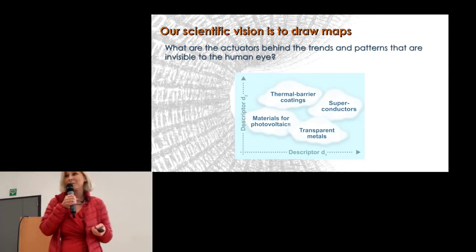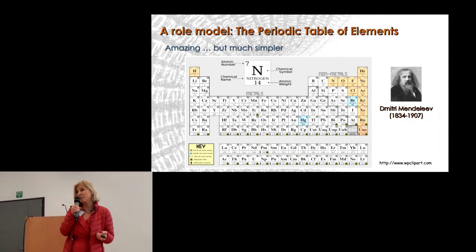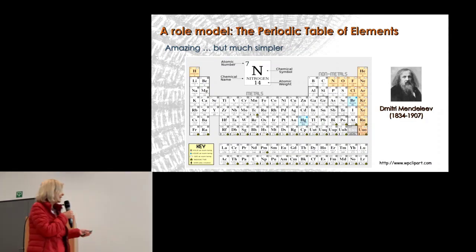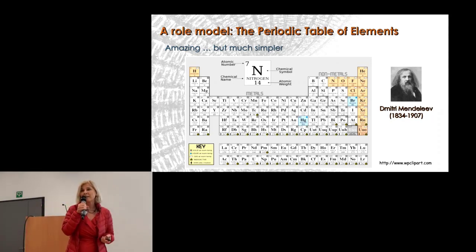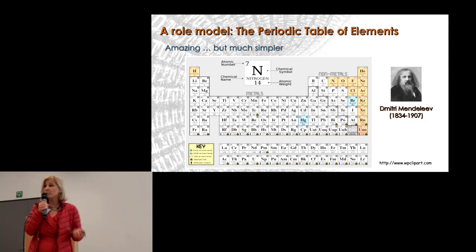We have a role model for this: the periodic table of elements. It's a two-dimensional representation, and it was really genius. Mendeleev came up with this at a time when quantum mechanics was not in place, just looking at the properties of atoms and arranging them in a way that still gives us quite a bit of understanding of chemistry and physics today. Looking at materials, everything will be much more complicated and highly dimensional, but at some point I think it should be possible.